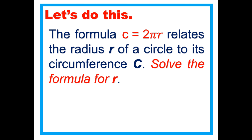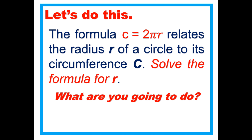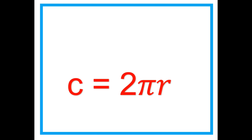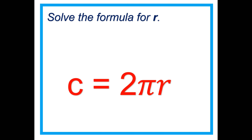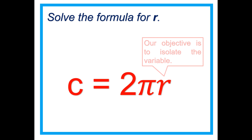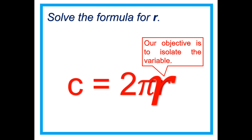The formula C equals 2πr relates the radius r of a circle to its circumference C. Solve the formula for r. We're going to solve the formula for r. Our objective is to isolate the variable r.